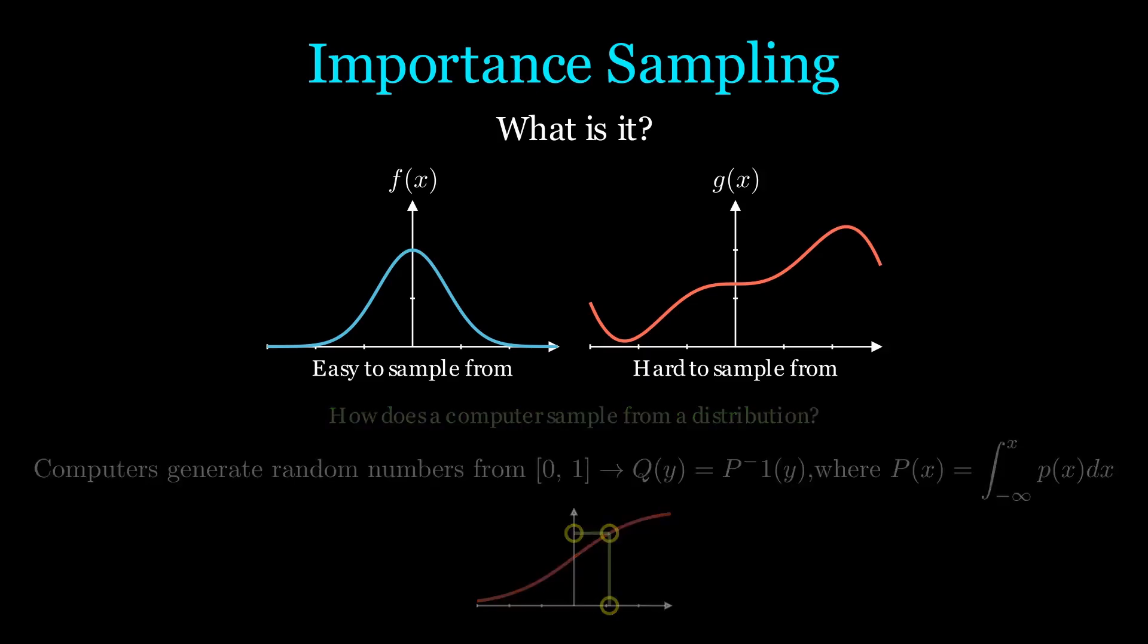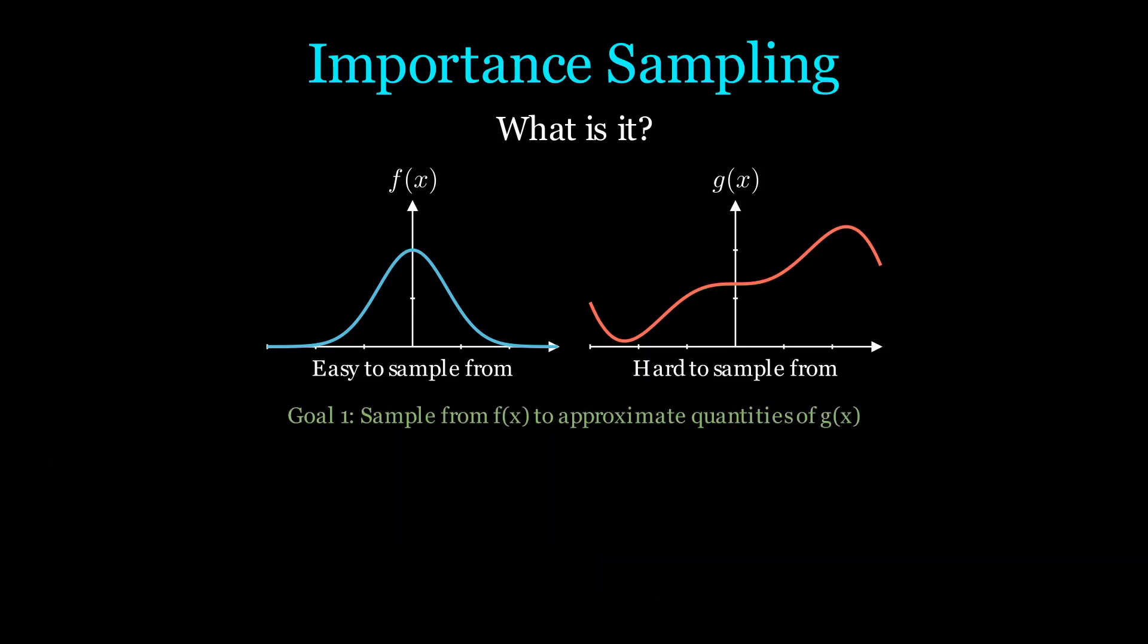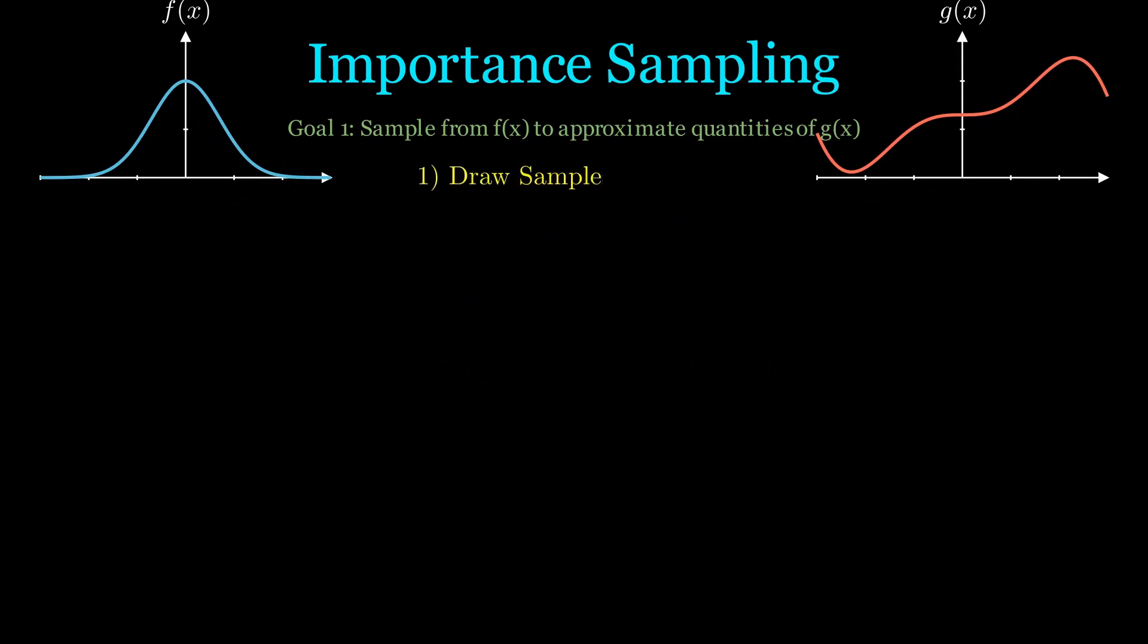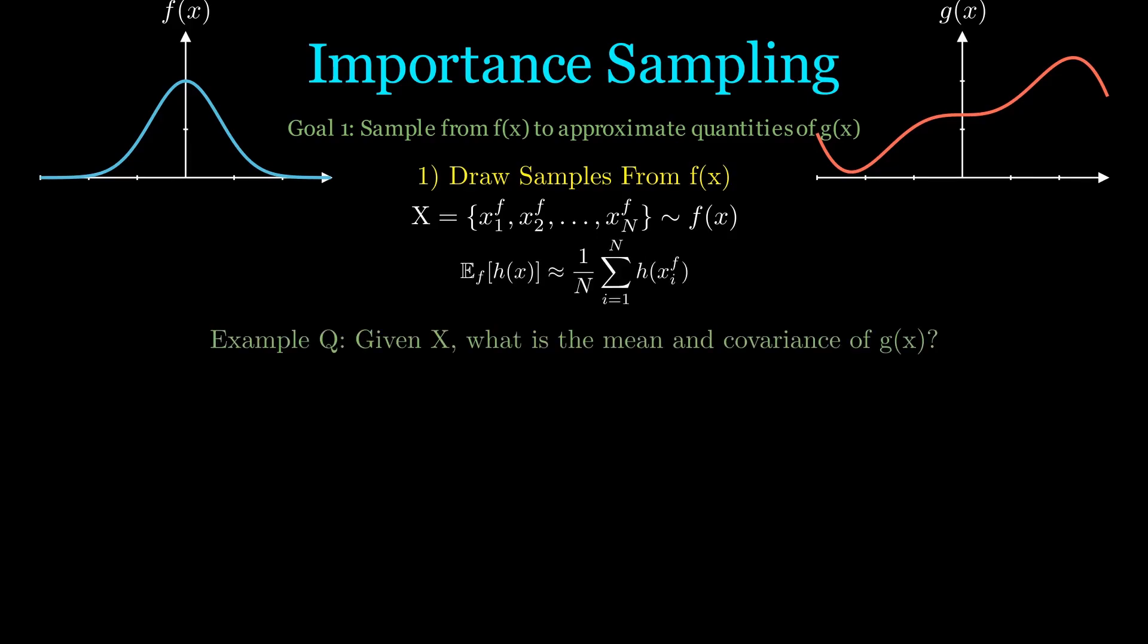So our first goal is to sample from f but approximate quantities from g(x). Step 1 is to draw n samples from f(x). Note that the superscript denotes which distribution the sample is drawn from. These points can then be used to compute quantities of our distribution f.